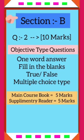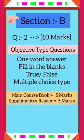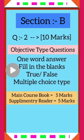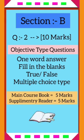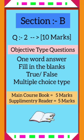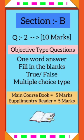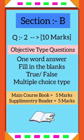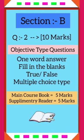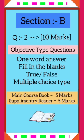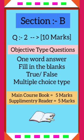Section B will be of objective type questions of 10 marks from the lessons and poems of the syllabus. The questions will be like one-word answer questions, fill-in-the-blanks, true-false, or multiple-choice type questions.